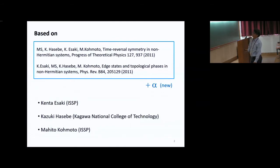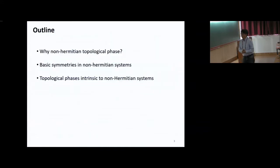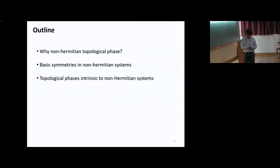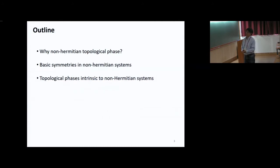I will mainly explain the second paper. The outline is as follows: why we consider non-Hermitian topological phases — by considering them, we may have new topological phases. Then I'll explain the basic symmetry in non-Hermitian systems, where we can have new kinds of symmetry. Finally, I'll explain our example of topological phases interesting to non-Hermitian systems.